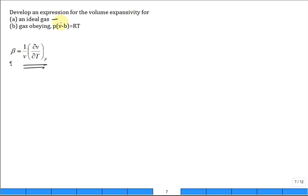So the ideal gas is PV equals RT, or V equals RT over P. And it looks like I need to differentiate V with respect to T holding pressure constant.